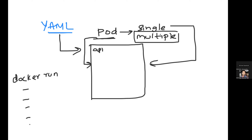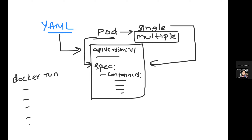Inside the YAML specification, you provide all the details of the container — you have a containers section where you provide container specifications, including multiple containers if needed. Once you look at the pod YAML file, you'll understand: it is exactly similar to your Docker container, but instead of the command line, you are putting everything in a YAML file. That's the only difference.